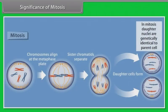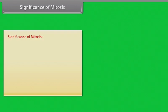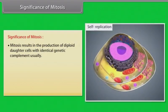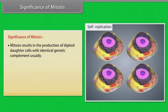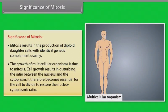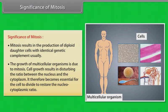Mitosis results in the production of diploid daughter cells with identical genetic complement. Usually the growth of multicellular organisms is due to mitosis. Cell growth results in disturbing the ratio between the nucleus and the cytoplasm. It therefore becomes essential for the cell to divide to restore the nucleocytoplasmic ratio.